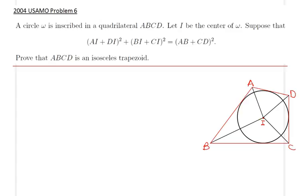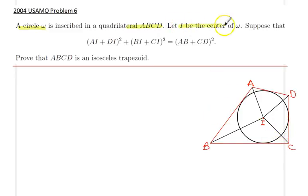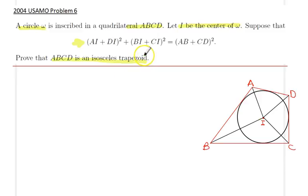Hello everyone. In this lecture we will be going over 2004 USAMO problem number 6. A circle omega is inscribed in a quadrilateral ABCD as shown in the picture. Let I be the center of this circle. Suppose the following equality condition holds; we would like to show that quadrilateral ABCD is in fact an isosceles trapezoid.